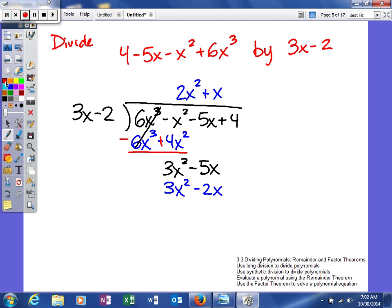Again, we're going to subtract, so I'm going to change both these signs. Those are going to cancel, and then when I put these together, it's going to give me negative 3x, and then I'll bring down the positive 4.